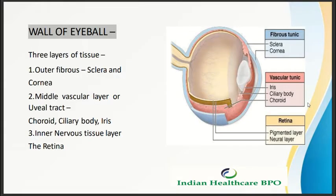The wall of the eyeball consists of three layers of tissues: the outer fibrous layer, the middle vascular layer or uveal tract, and the inner nervous tissue layer.